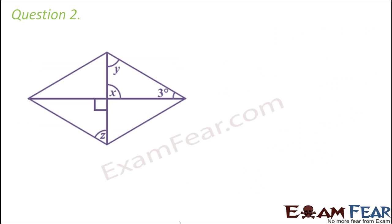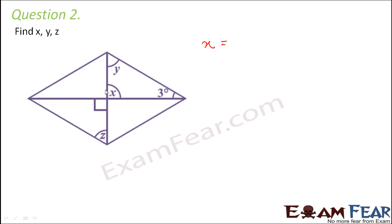Question number two: find x, y, and z. Here again we have a parallelogram where we have to find these values. Let us look at this triangle, but first let us see which value can be found in the easiest possible way. The value of x can be found very easily — let's look at what x represents.